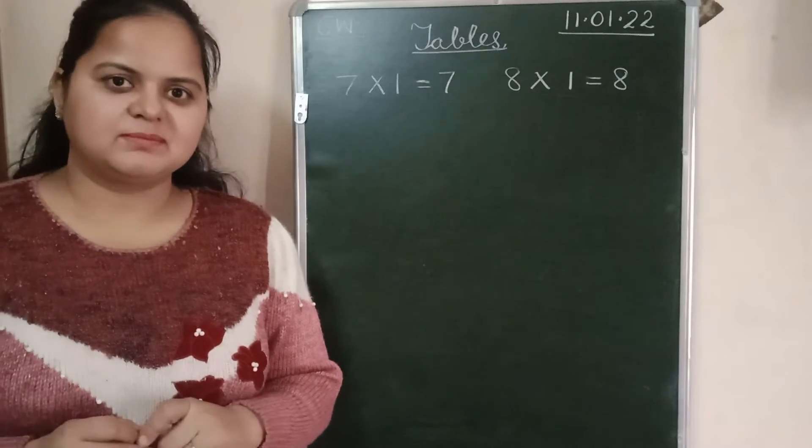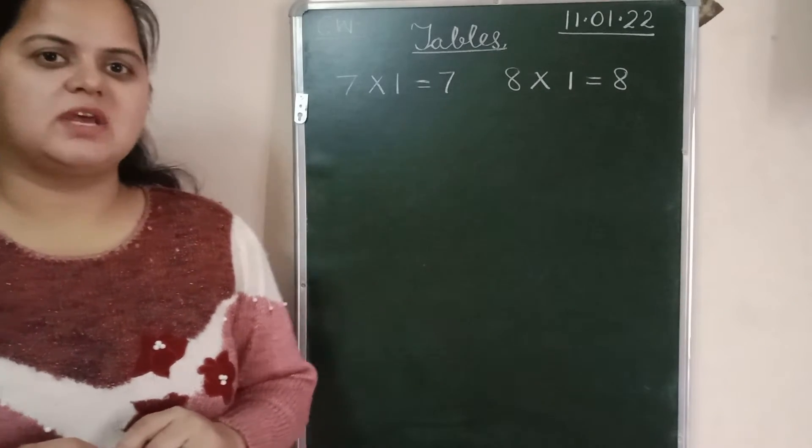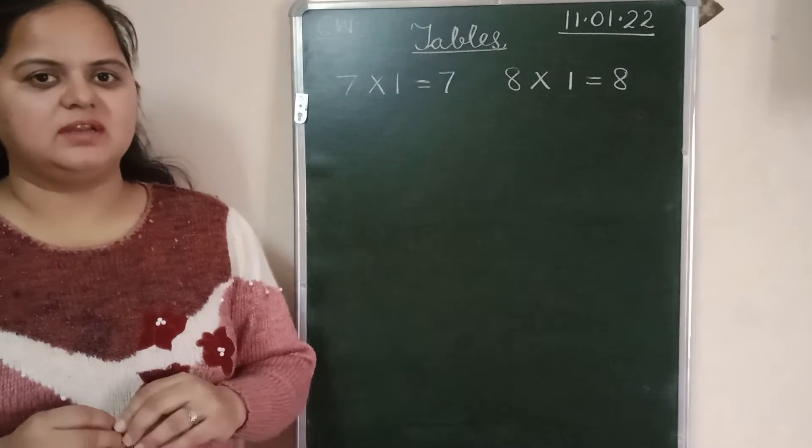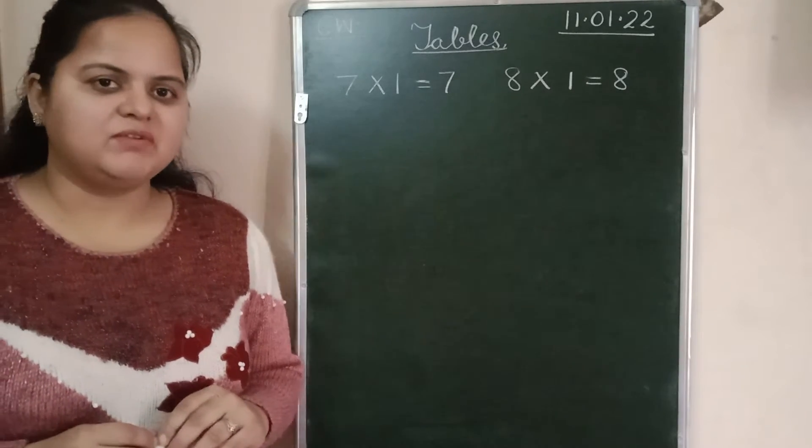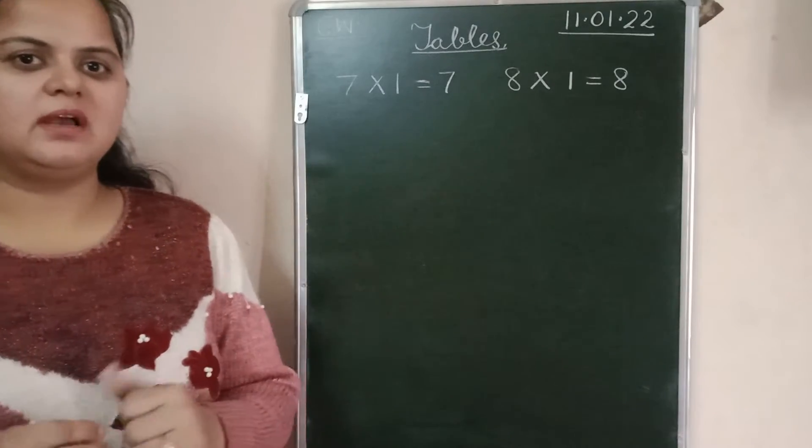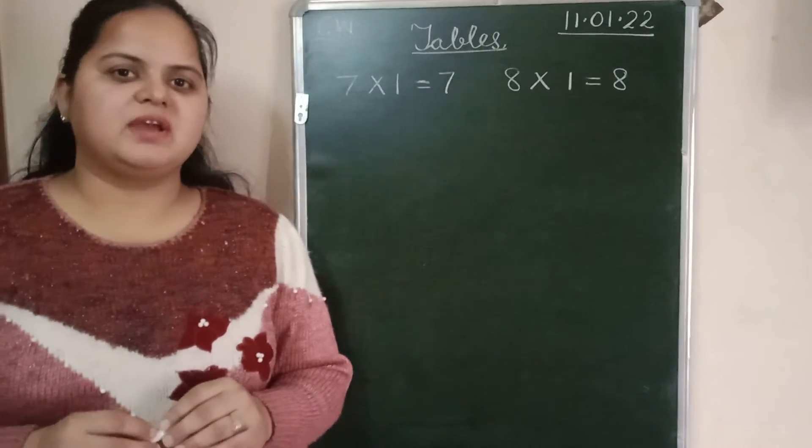7-1s are 7. 7-2s are 14. 7-3s are 21. 7-4s are 28. Yes, very good. Speak along. Now, 7-5s are 35.